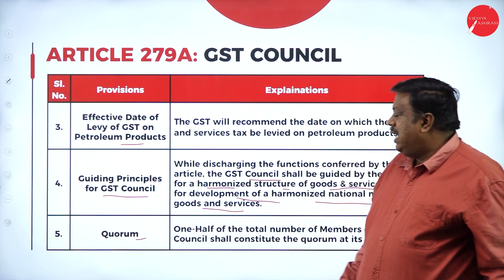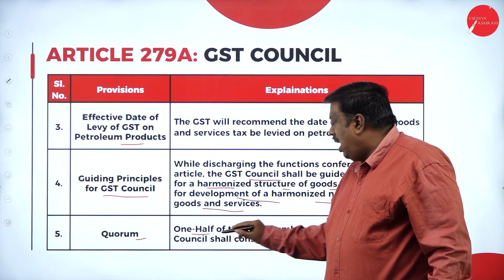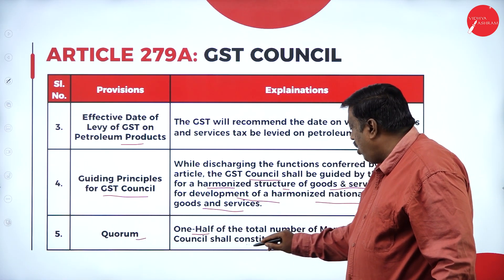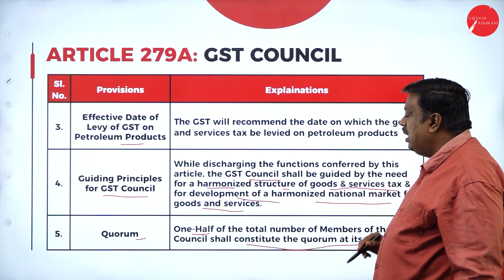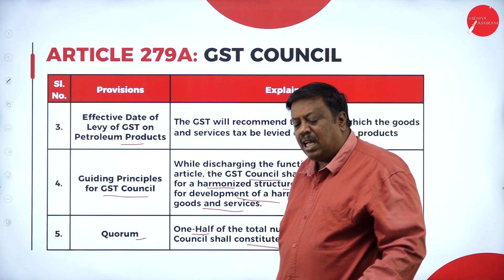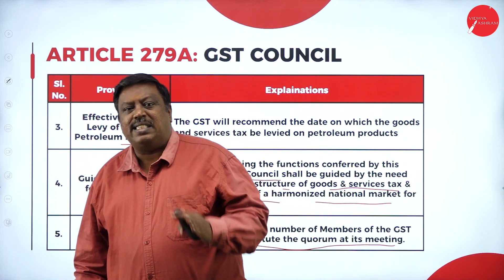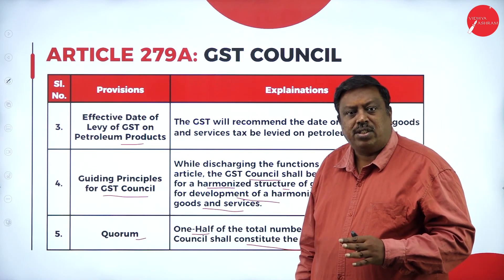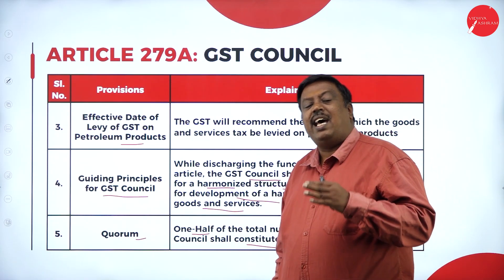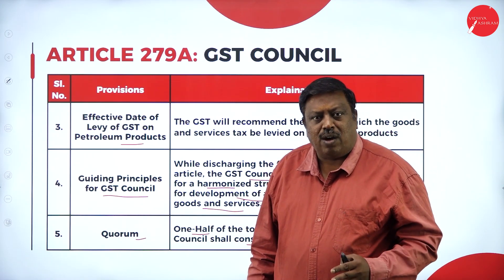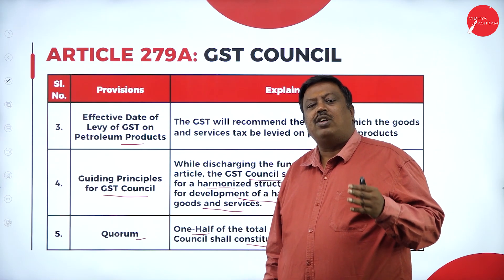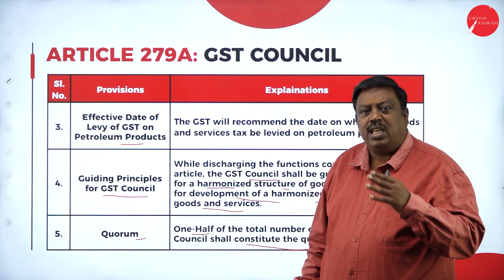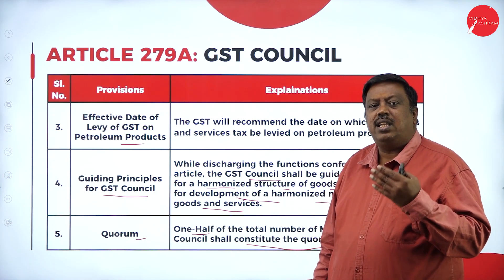Regarding quorum, one half of the total number of members of the GST Council shall constitute the quorum at any meeting. For example, if there are 10 members, at least 5 must be present to pass a resolution. If there are less than 5 members in the GST Council meeting, they cannot pass any resolution or take major decisions for changes to the GST.